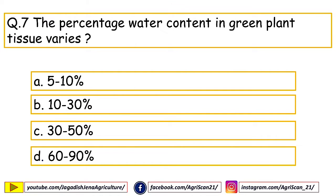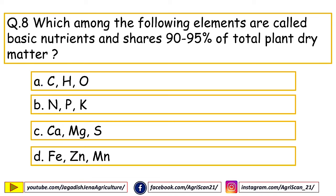Next question: the percentage water content in green plant tissue varies — options are 5–10%, 10–30%, 30–50%, 60–90%. The right answer is 60–90%.